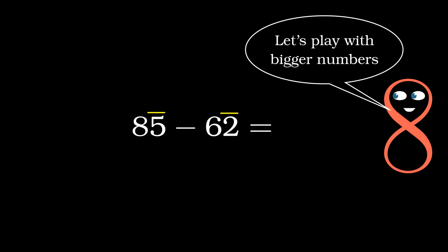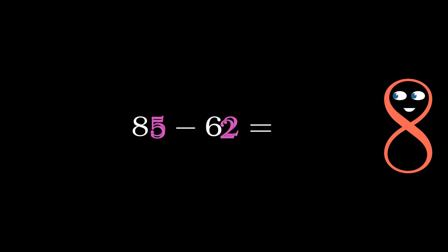Just like addition, we start with the digits on the right. 5 minus 2 equals 3, which becomes part of the result. And then, the digits on the left where 8 minus 6 equals 2, and thus 85 minus 62 equals 23. And here's the vertical version of this example.